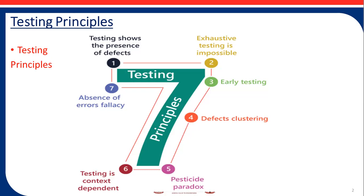The fourth principle is defect clustering. Defects cluster together — a small number of modules usually contains most of the defects discovered during pre-release testing, or is responsible for most of the operational failures. Predicted defect clusters and actual observed defect clusters in test or operation are an important input into a risk analysis used to focus the test effort.